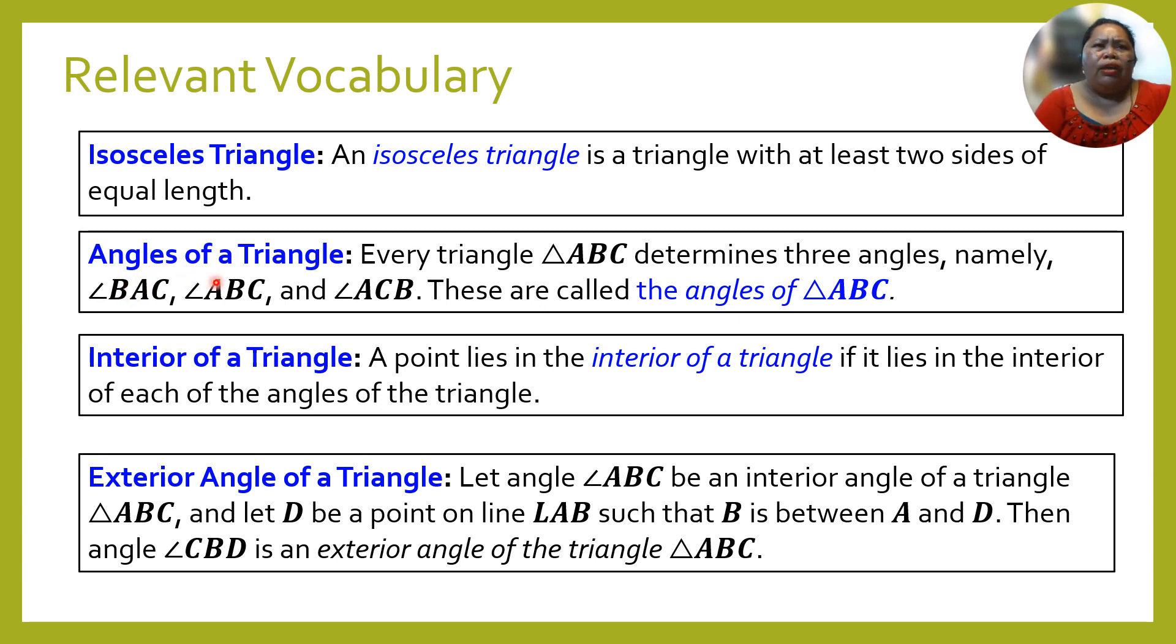Next we have angles of a triangle. Every triangle ABC determines three angles, namely we have angle BEC, angle ABC, and angle ACB. These are called angles of a triangle ABC.